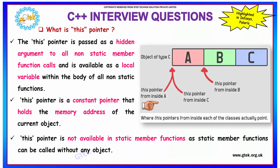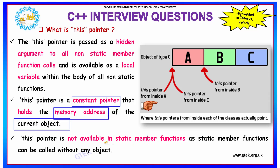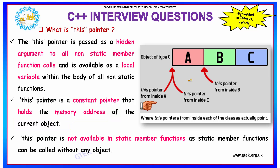What is the this pointer? The this keyword is used as a hidden argument to all non-static member function calls, and it is available as a local variable within the body of all non-static functions. It is a constant pointer that holds the memory address of the current object.